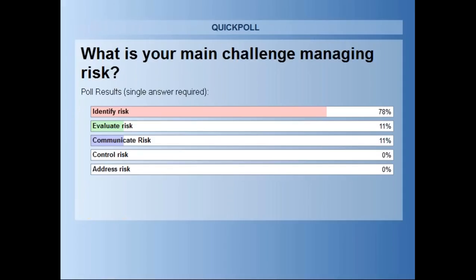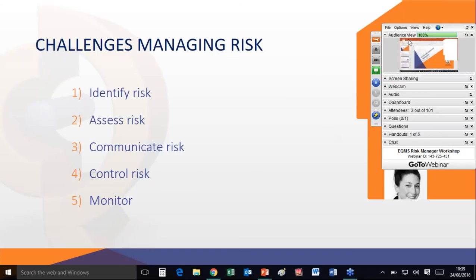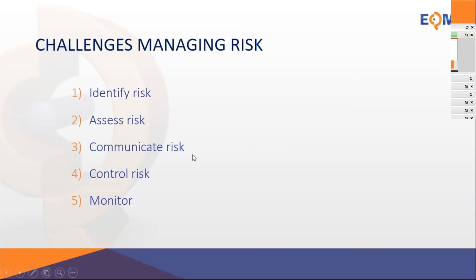So 78% of you agreed that identifying risk was a big challenge, and then we have a split between evaluating the risk and communicating the risk, which is quite a low proportion compared to the initial 78%. So that proves that identifying the risk is key, but also very difficult initially, until you can understand how to measure those risks and what categories each risk falls into. Thank you for sharing, everyone.